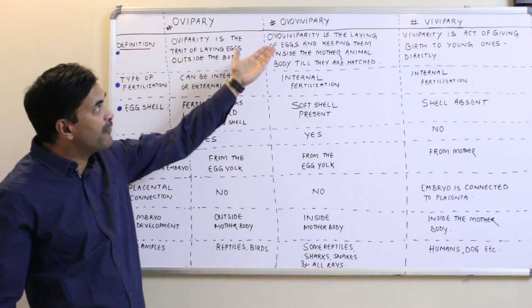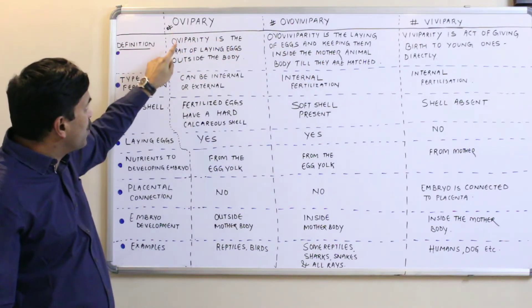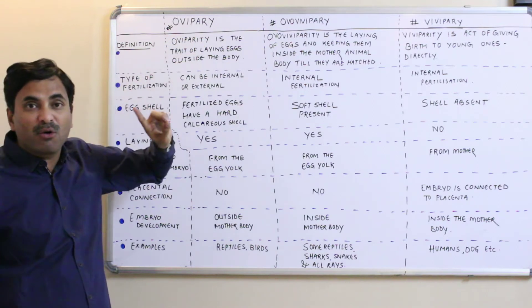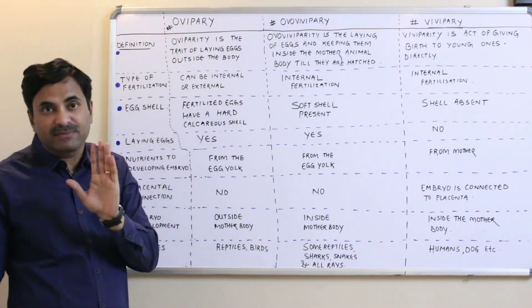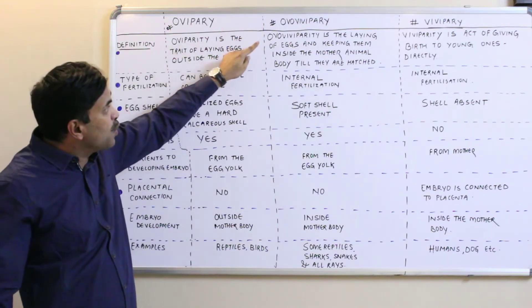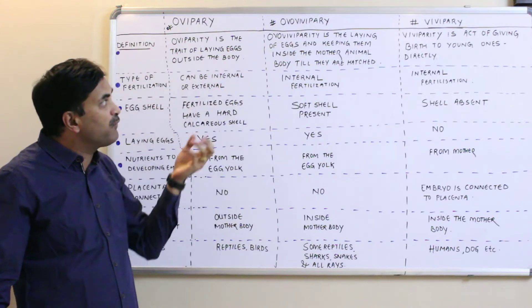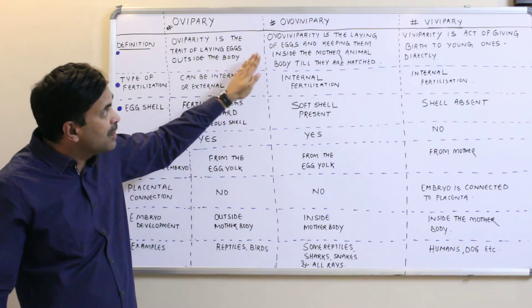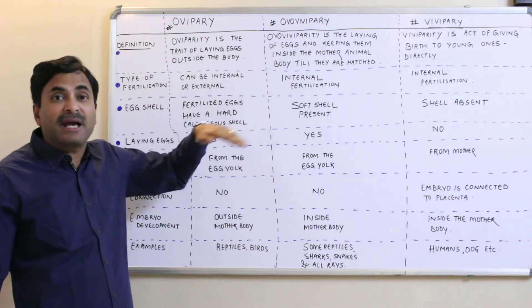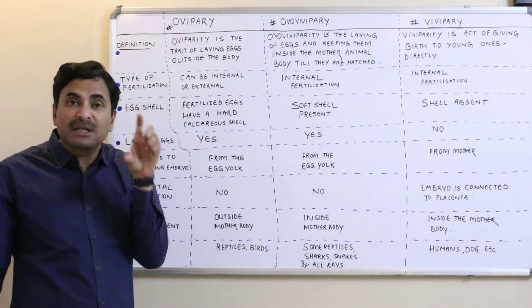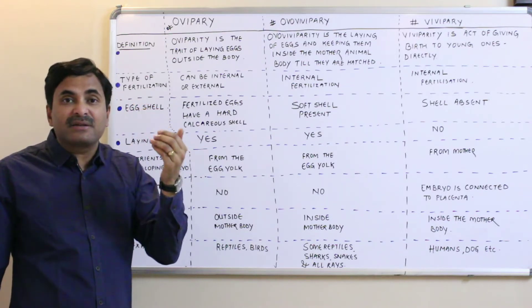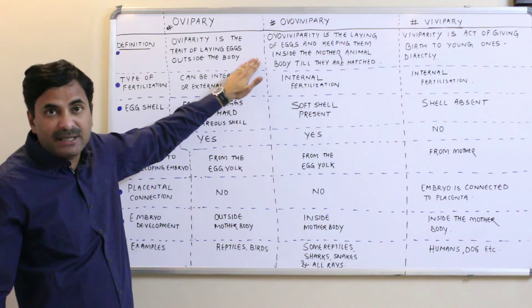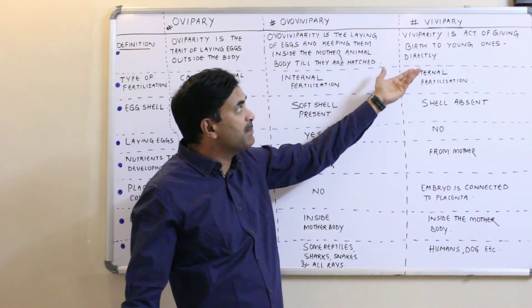Oviparity represents the trait of laying eggs outside the body — oviparous organisms lay eggs outside the body. Ovoviviparity is also the act of laying eggs, but here the eggs are not laid outside the body; the eggs are kept within the mother's body, hatched inside, and the young ones become mature inside the mother's body before being delivered out.